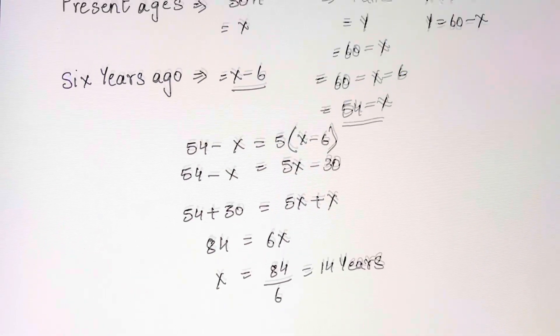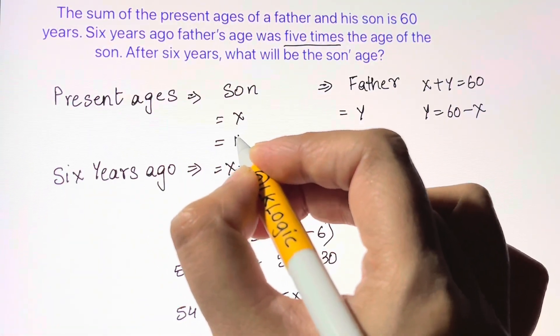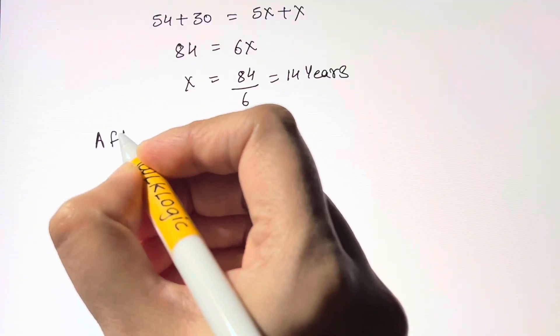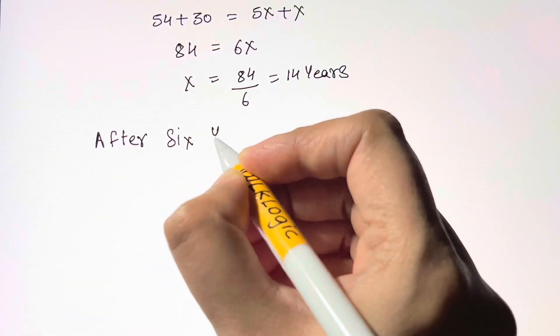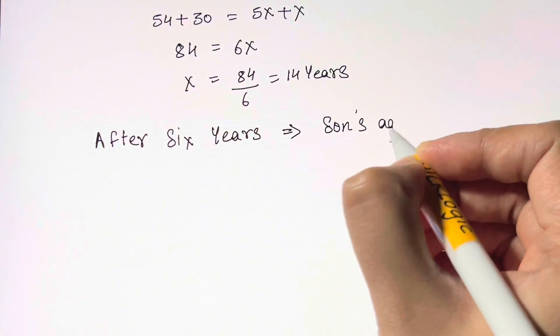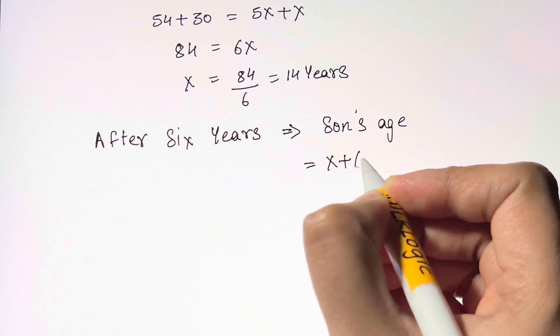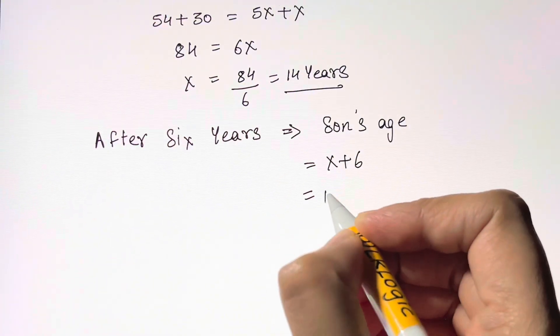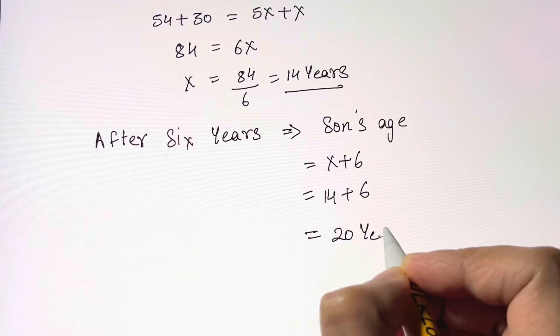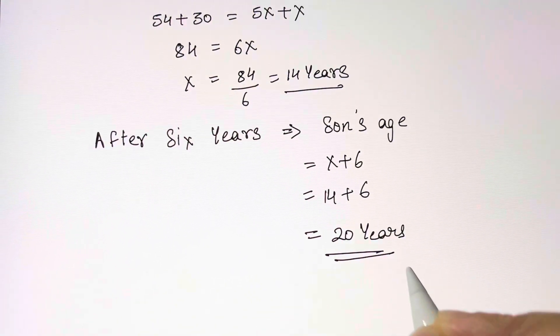We've got the present age of the son, which is 14 years. After six years, what will be the son's age? As it says 'after six,' we add six more years. His present age is 14 years, so add 6 to that: 14 + 6 = 20 years. That's your answer.